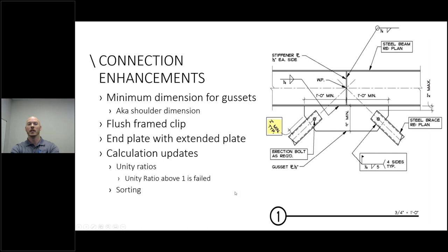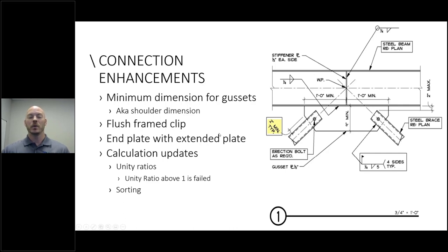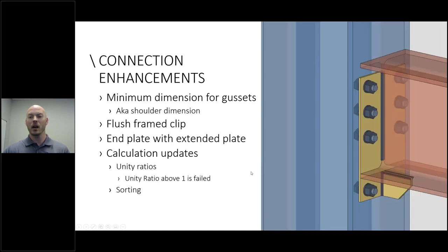Connection enhancements: we now have a minimum dimension for gussets, also called a shoulder dimension, found in project settings. Last year we saw flush framed shear plate connections; this year we've expanded that to flush framed clips, and we can now do end plates — when end plates extend past the flanges on a beam, we'll add a web extension plate similar to what we've done with clip angles in the past.